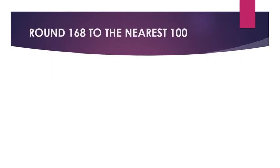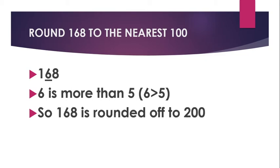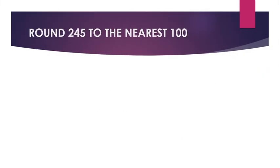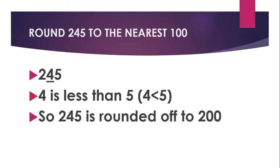Now let's learn through examples. Round 168 to the nearest hundred. First, look at the digit at the tens place: 6. Since 6 is more than 5, 168 is rounded off to the nearest hundred to 200. The second example: round 245 to the nearest hundred. Look at the digit at the tens place: 4. As 4 is less than 5, 245 is rounded off to 200.